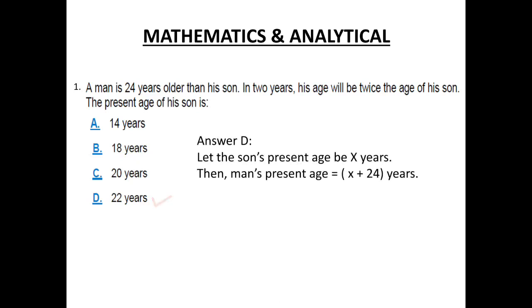Let the son's present age be x years. Now if his present age is x years, then the father's, the man's present age will be x plus 24. Why? Because in the first statement of the question, you can see that a man is 24 years older than his son.